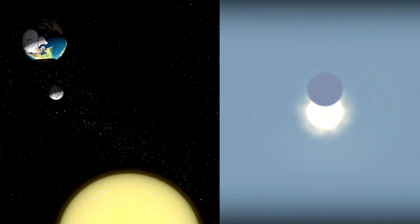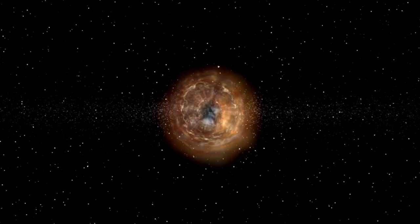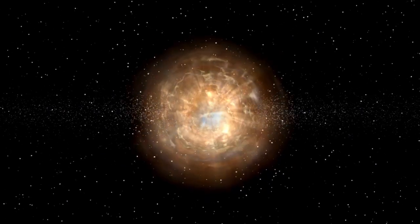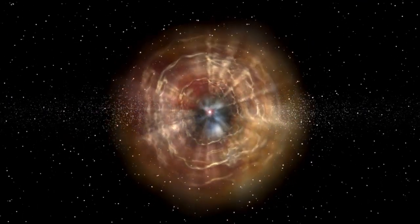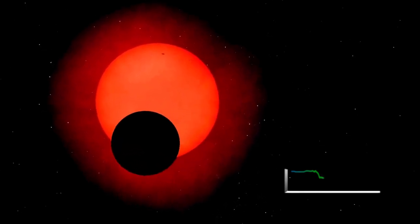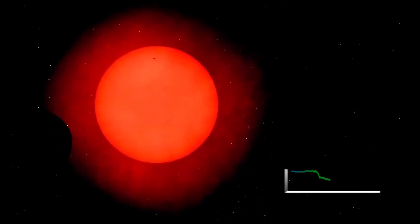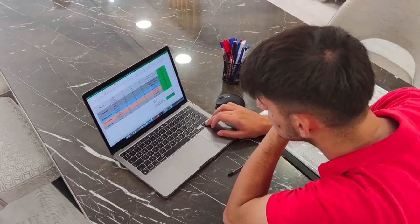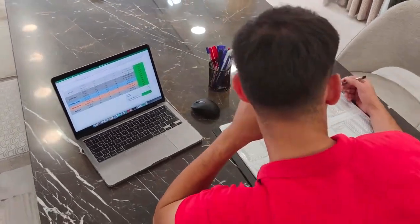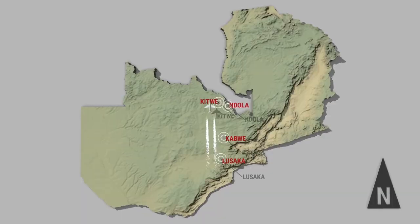Massive stars like Betelgeuse are complex laboratories of nuclear fusion, where the elements essential to life are created. The sudden brightening may indicate that fusion of heavier elements is intensifying, pushing the star toward its inevitable end. When fusion can no longer produce enough energy to counteract the force of gravity, the star collapses, leading to a dramatic explosion.